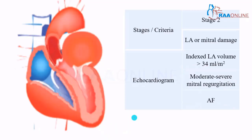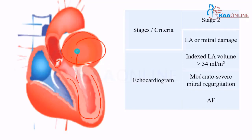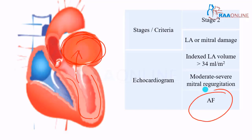Coming to Stage 2 — there is quite severe stenosis. Your LV is damaged and the LA is enlarged; some amount of blood in the LV goes into the LA, so moderate to severe mitral regurgitation can happen. The LA volume is greater than 34 ml per meter squared, and as the LA enlarges, the patient might have atrial fibrillation. This is Stage 2.